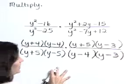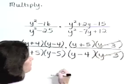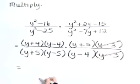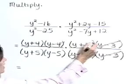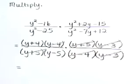Now for the fun part. Let's cancel common factors. We've got y minus 3 in both the numerator and denominator, y minus 4s, and we see a y plus 5 in both.